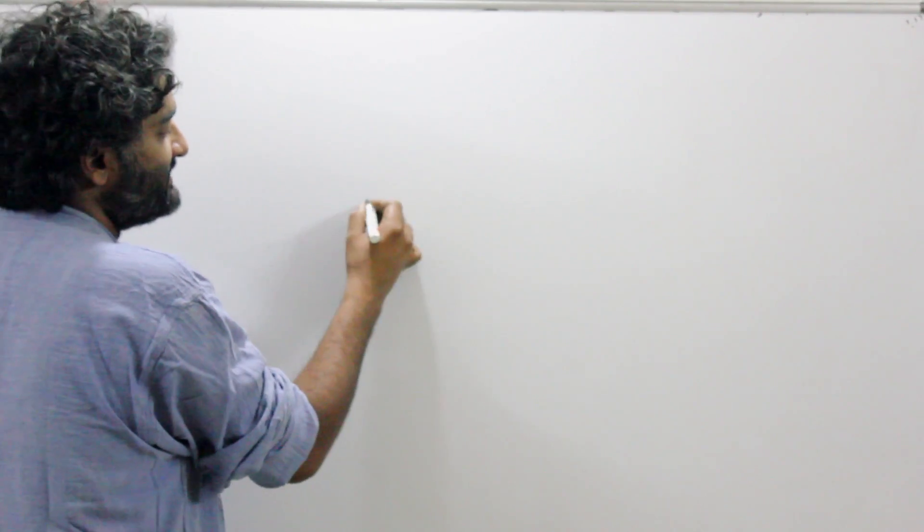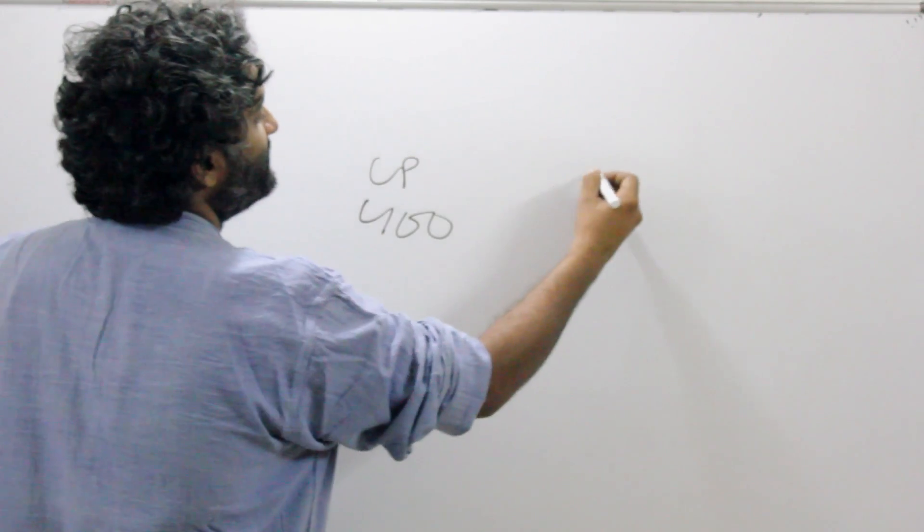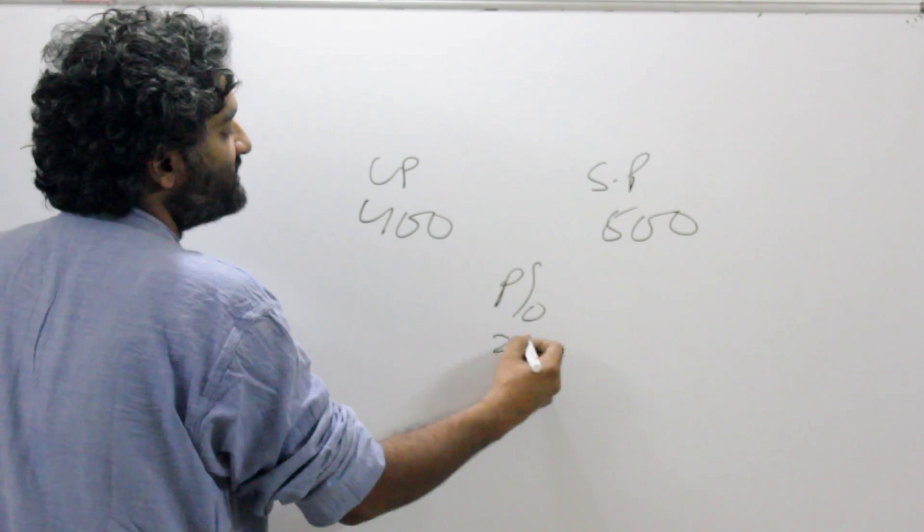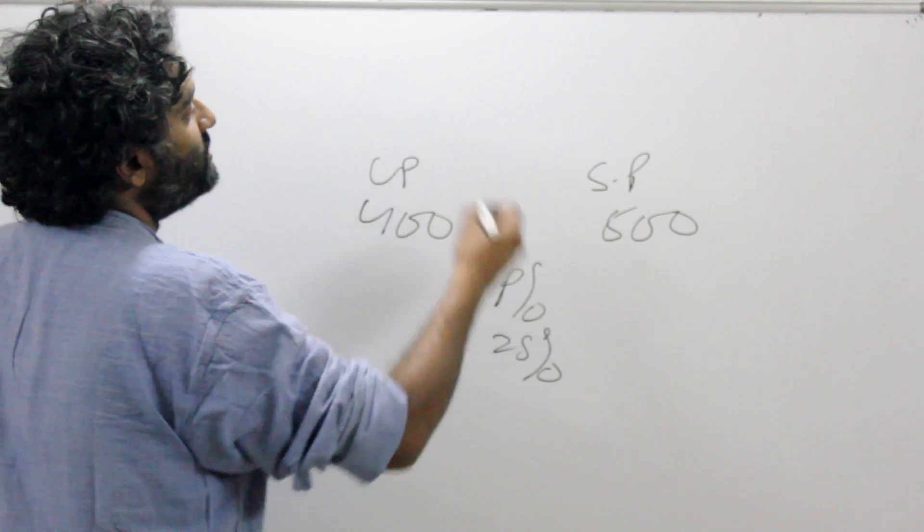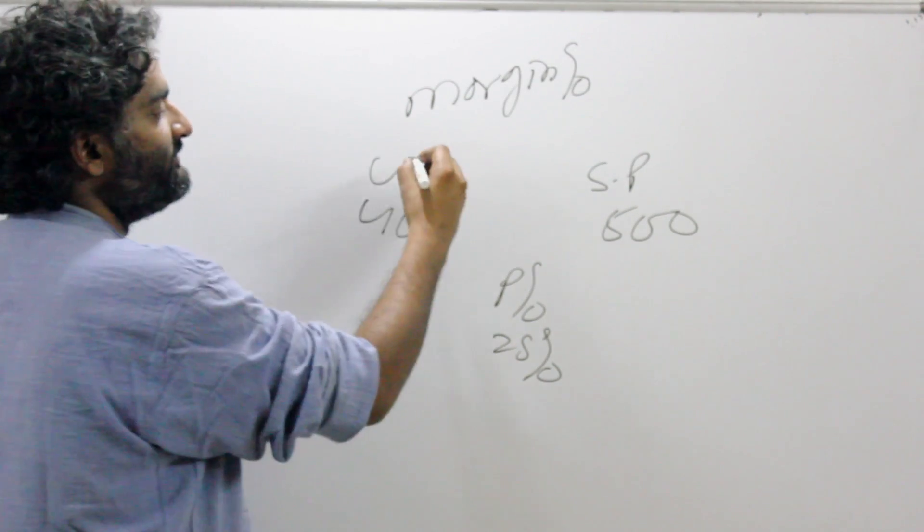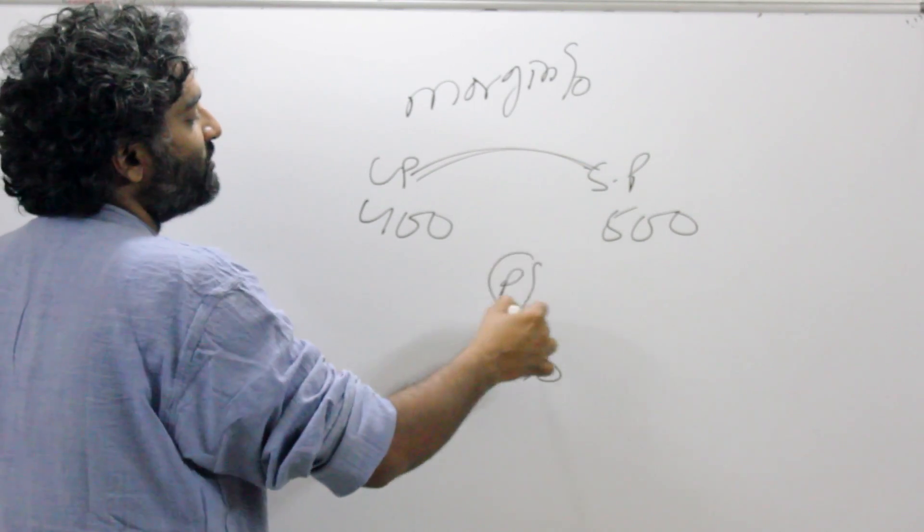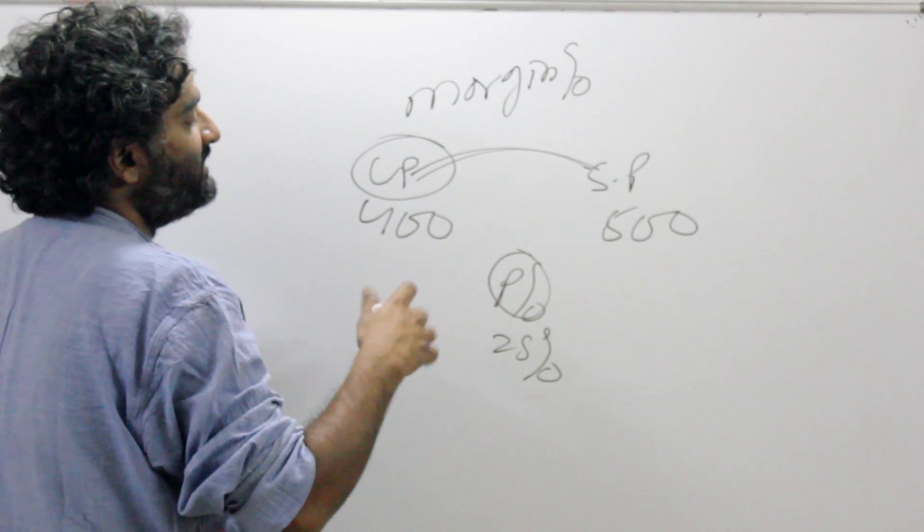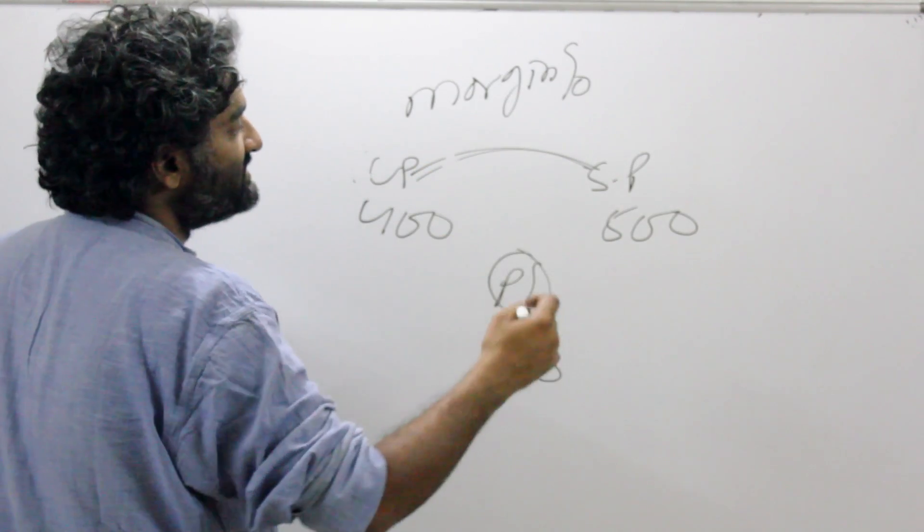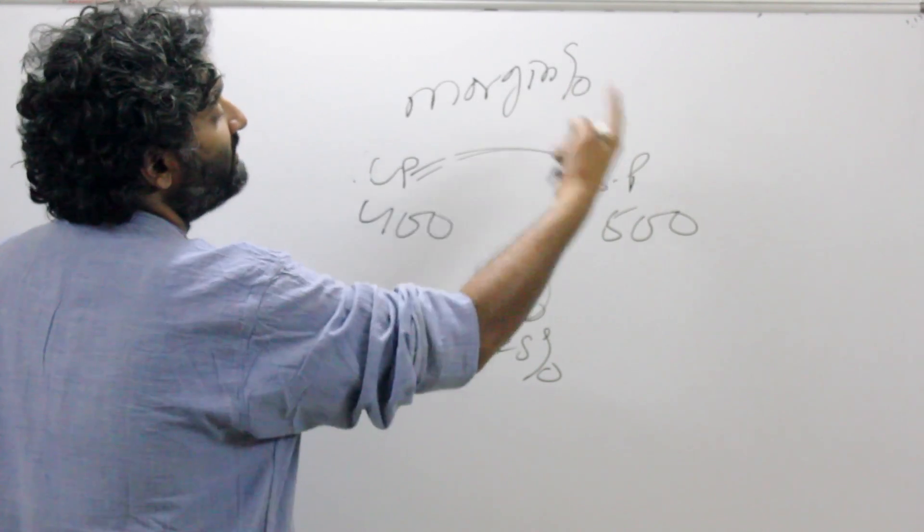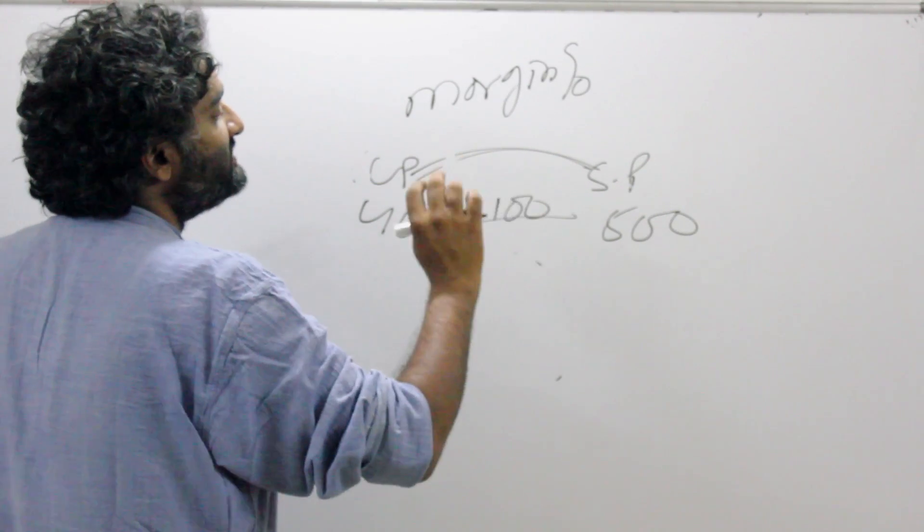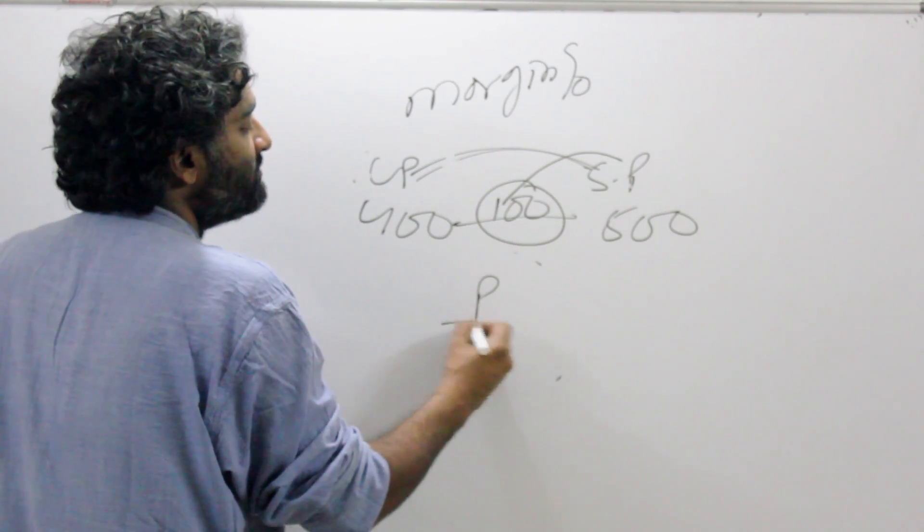Let's go back to the same example that we've done earlier. The cost price is 400 and the selling price is 500. And we worked out that the profit percentage is going to be 100 by 400, which is 25%. But we're introducing a new term here and the term is margin percentage or just margin. Just the way when we're looking at these two numbers and we're saying the profit percentage connects them, the CP is being considered the base. What if I take the selling price as the base?